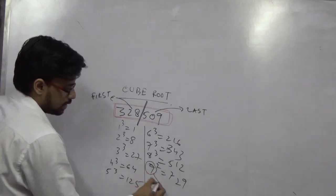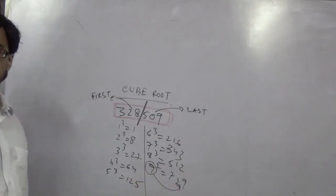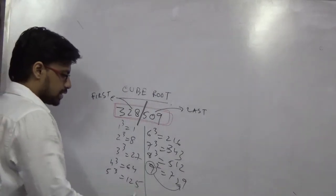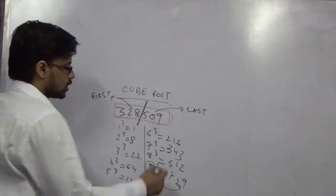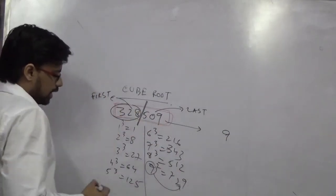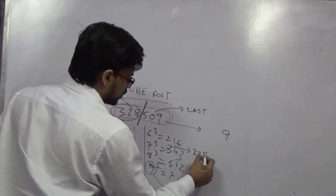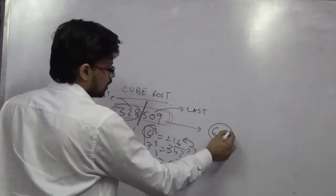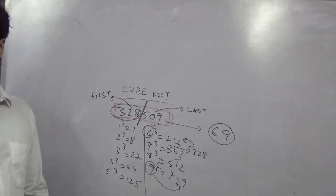You see, if there is 9, so the last digit is also 9. If it is 9, then the last digit is also 9. So simply this has a last digit 9. And 328 falls between which range? That falls between this range, so it has to be 6. So the answer is cube root of 69.